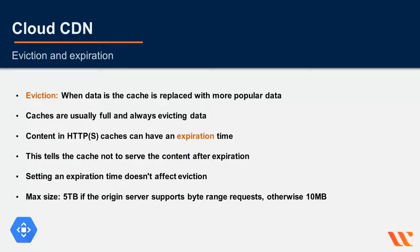When you use a back-end bucket, the origin server is Cloud Storage. When you use VM instances, the origin server is a web server software you run on those instances. Every cache has a limit on how much it can hold; however, Cloud CDN adds content to caches even after they're full, so to insert new content it needs to remove something first — this is called eviction. Typically caches are full in a healthy system and data is constantly being evicted. There is also an expiration parameter that tells the cache when the data expires. Eviction and expiration are separate; setting an expiration time does not affect eviction.